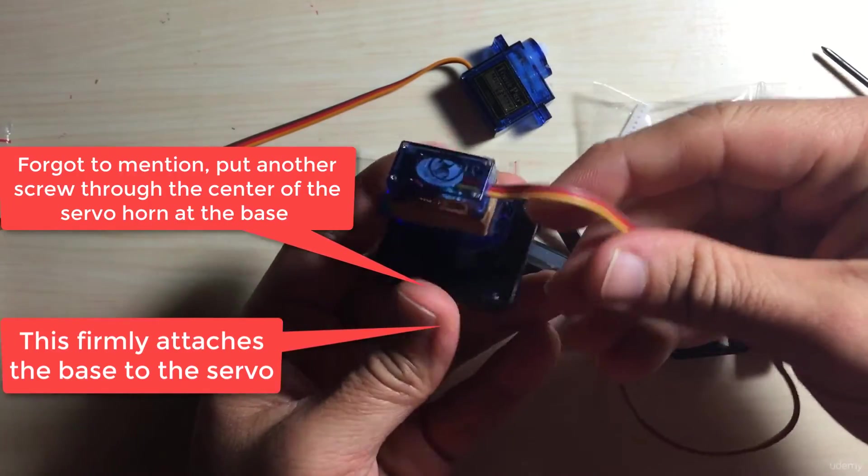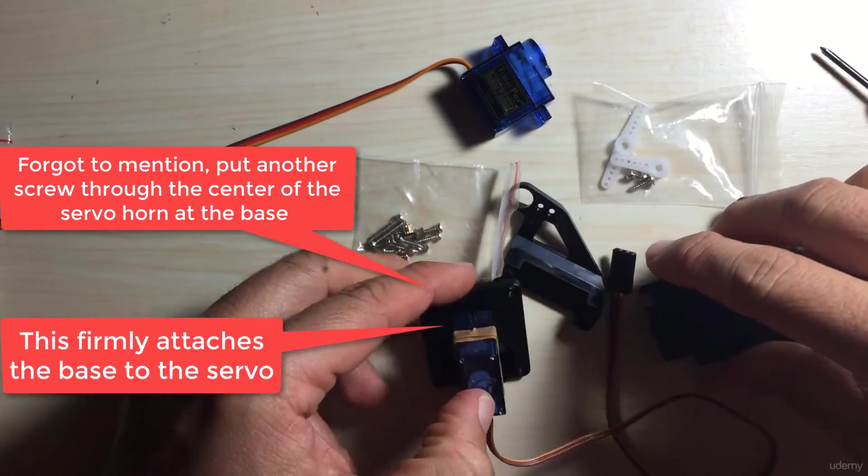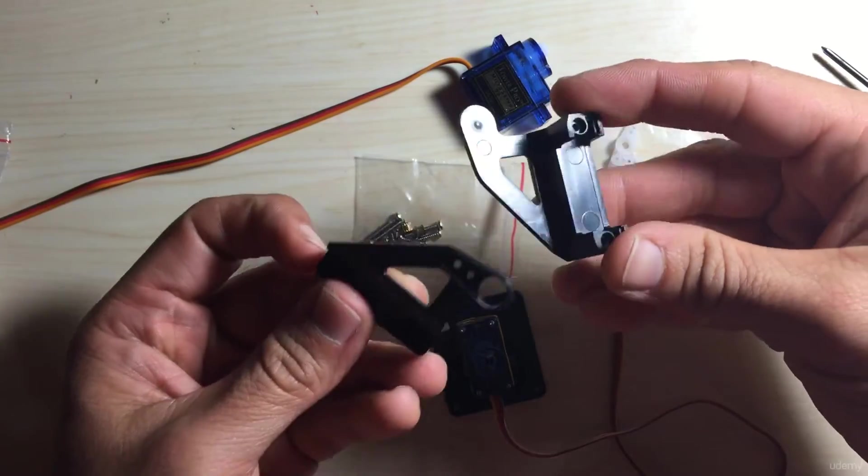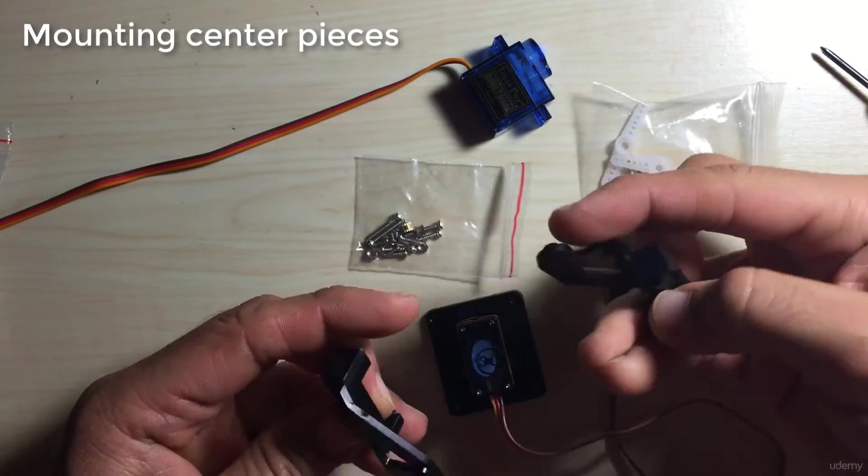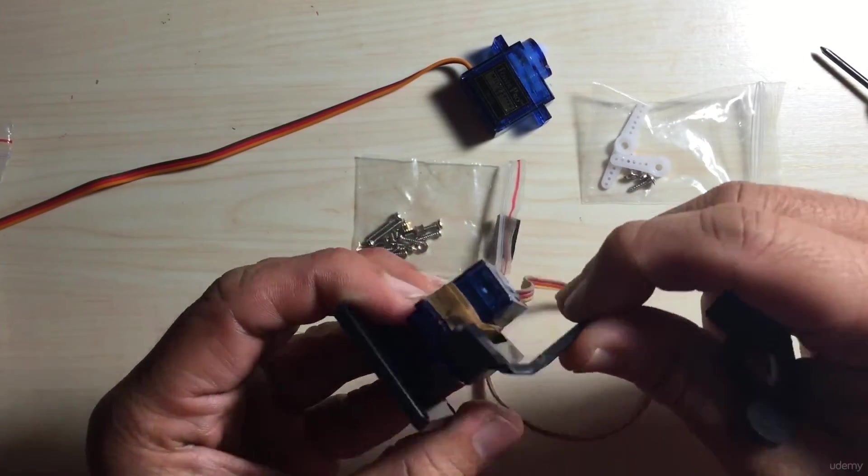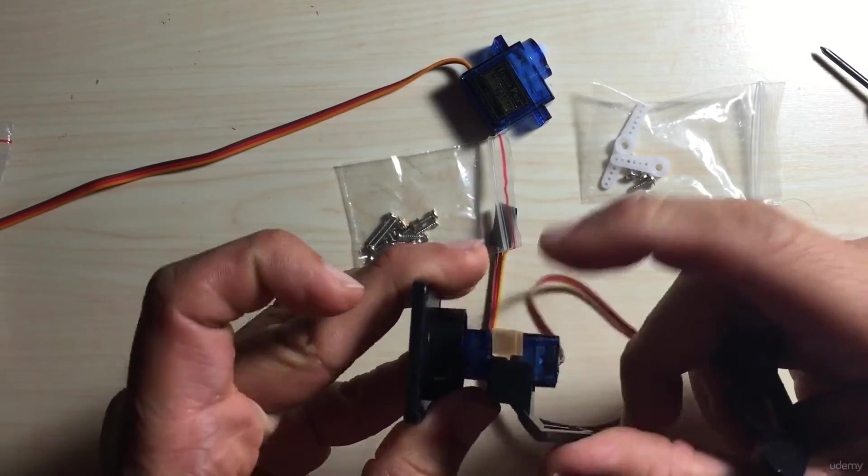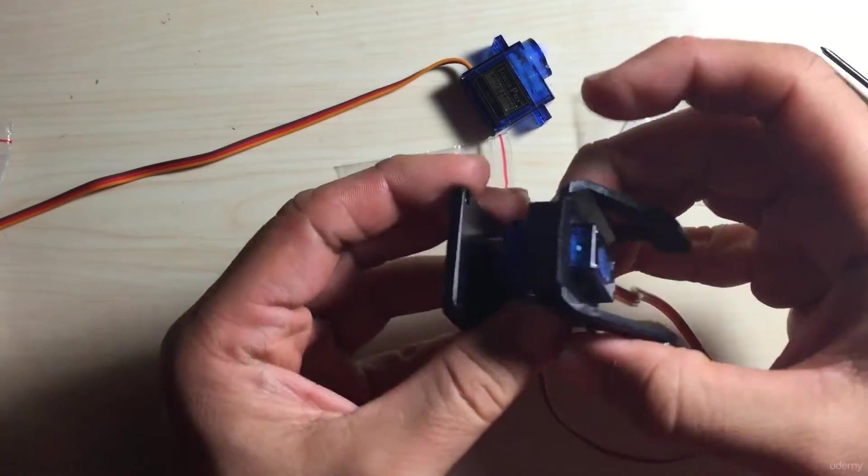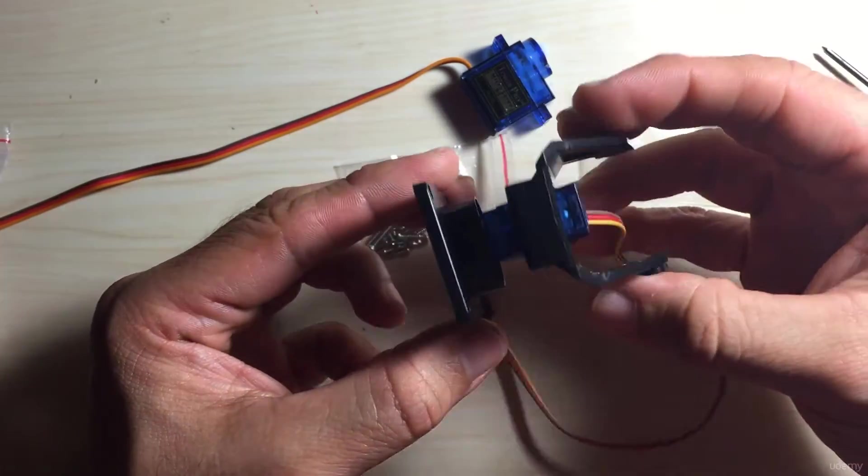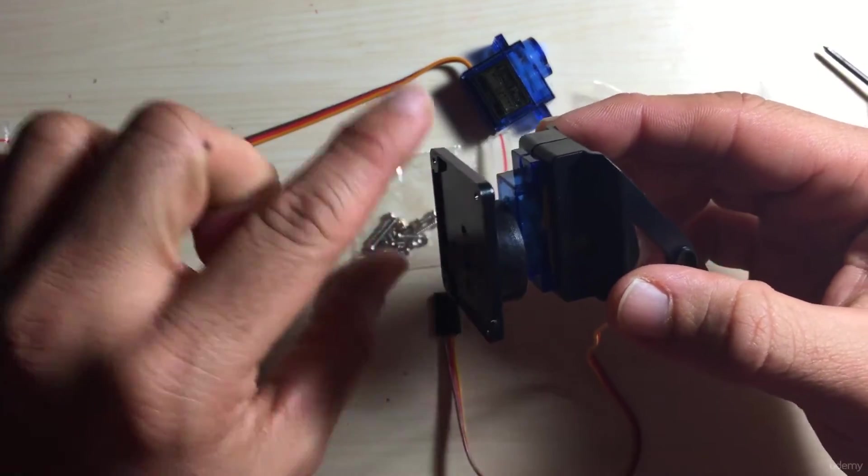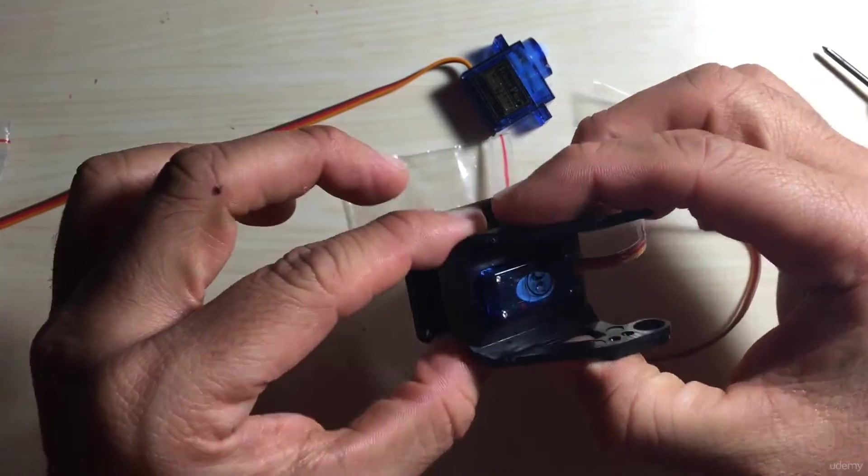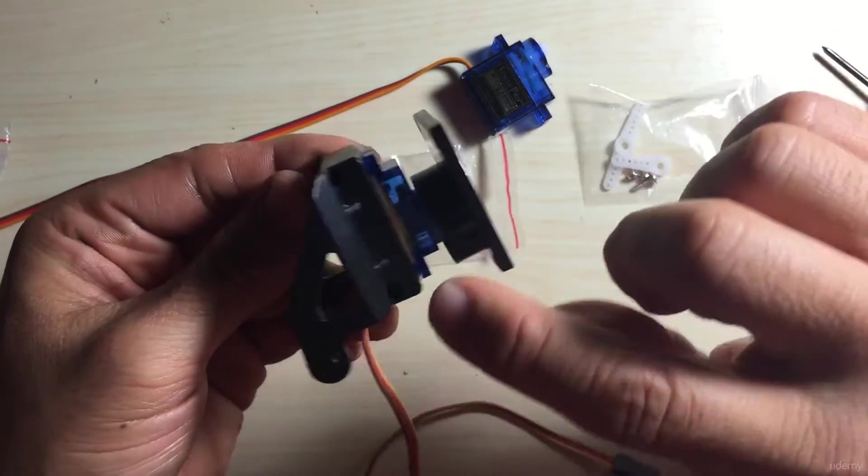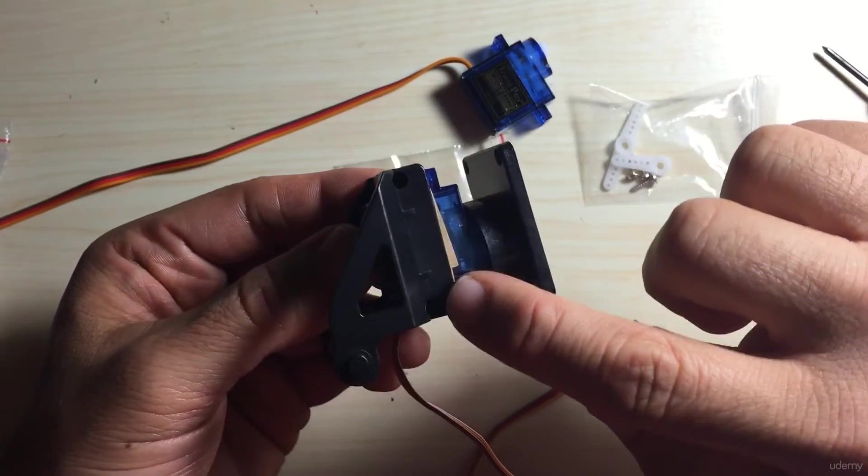Next we're going to take these two parts and we're gonna wrap these around the servo, one on this side and one on the other side. So it should fit snugly together. As I said by including that tape around the servo it actually helps to make sure it fits more snugly.